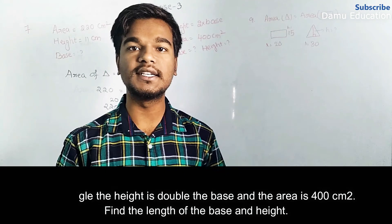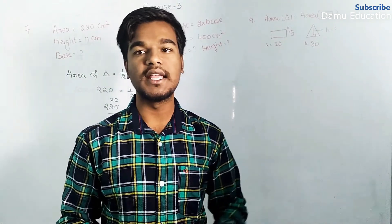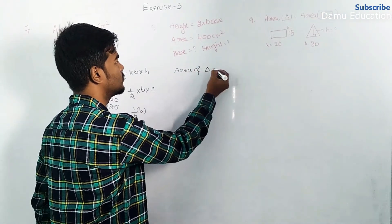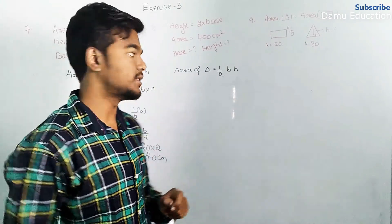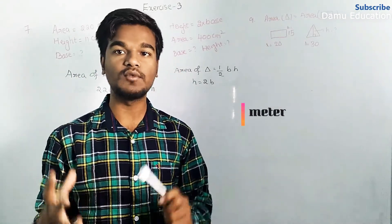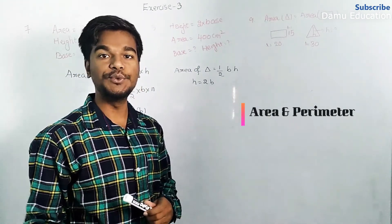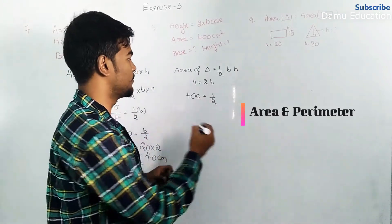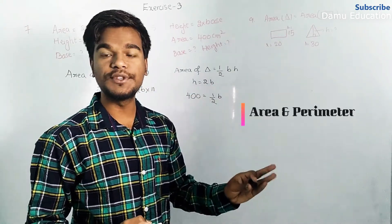We write the area of the triangle formula and substitute the base and height values using the given area. Area of triangle equals half into base into height. Since height equals two times the base, height equals 2B. So: 400 equals half into B into 2B.